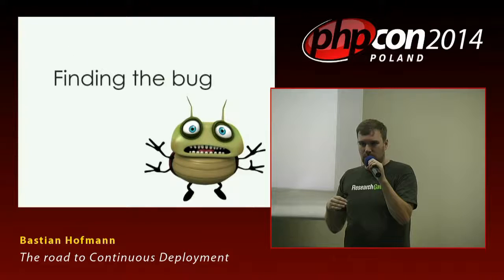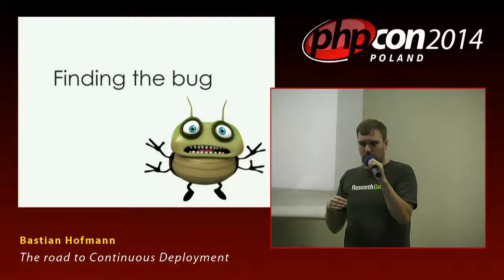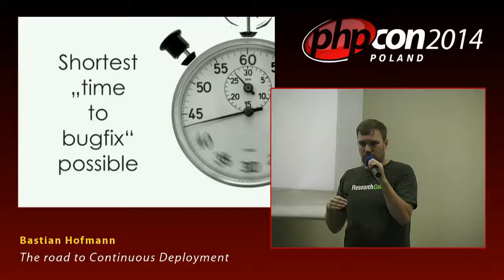Shipping less code also means shipping less bugs — it's basic mathematics. Also, more importantly, if there are bugs and no software is bug-free, it's much easier to find the bug. If the change set is just 100 lines of code, finding a bug introduced five minutes ago in those 100 lines is not much work. The developers who wrote the code probably still know why and how they did it, unlike two to four weeks ago when they've already moved on mentally. Releasing very often also means bug fix time gets shorter — shorter to find, shorter to identify, and your bug fix gets live to users very quickly.